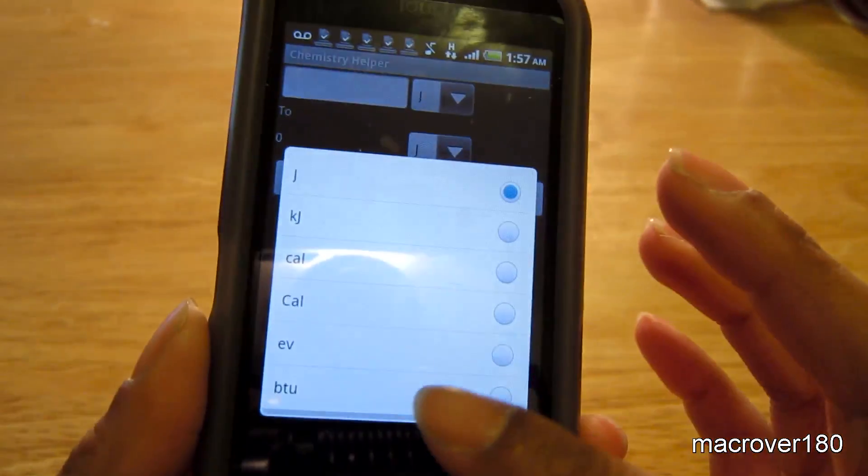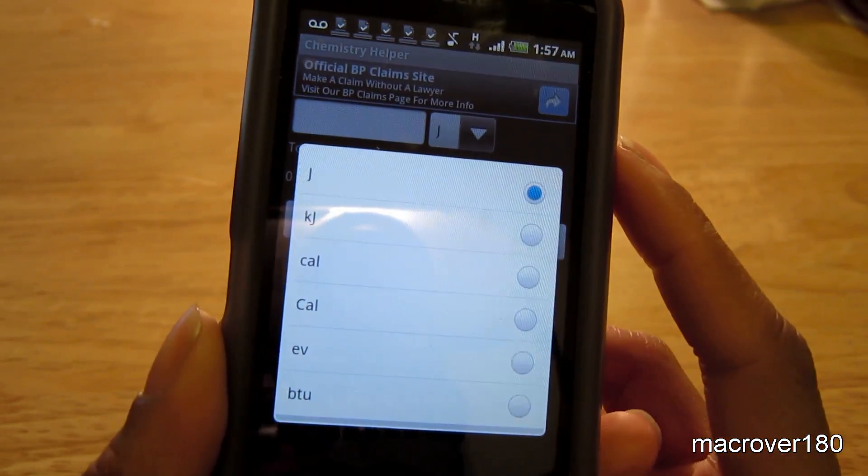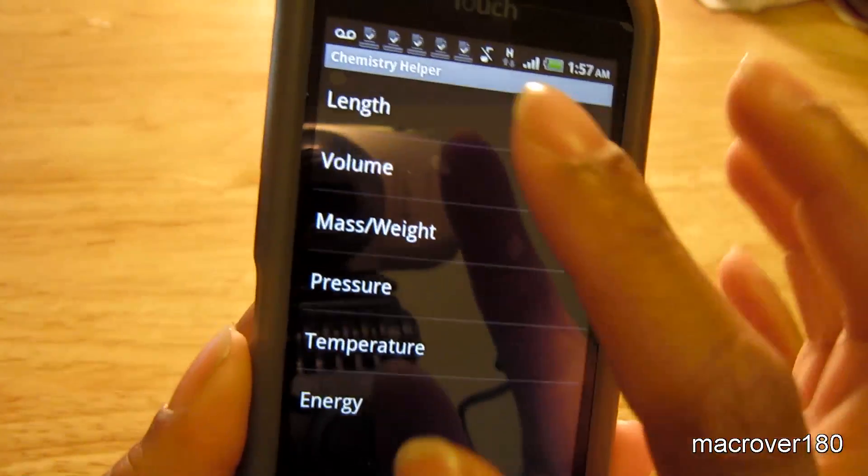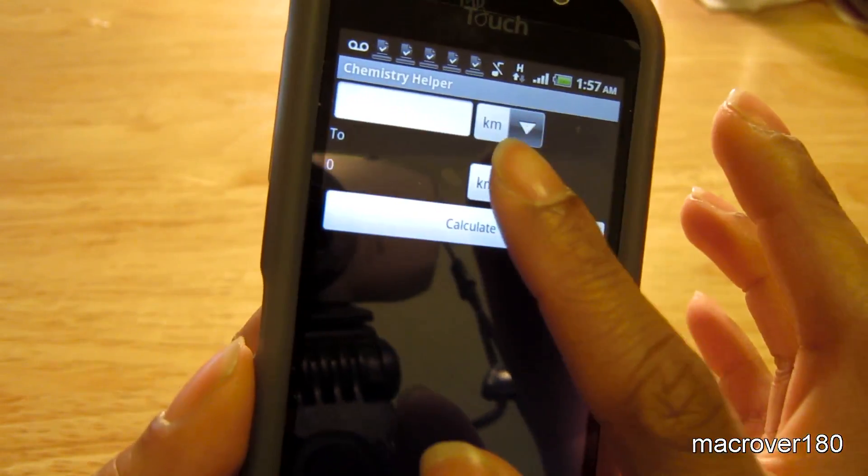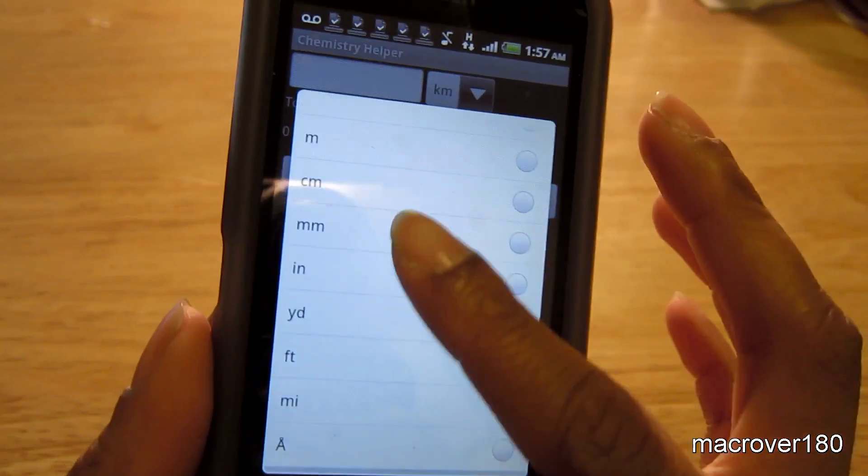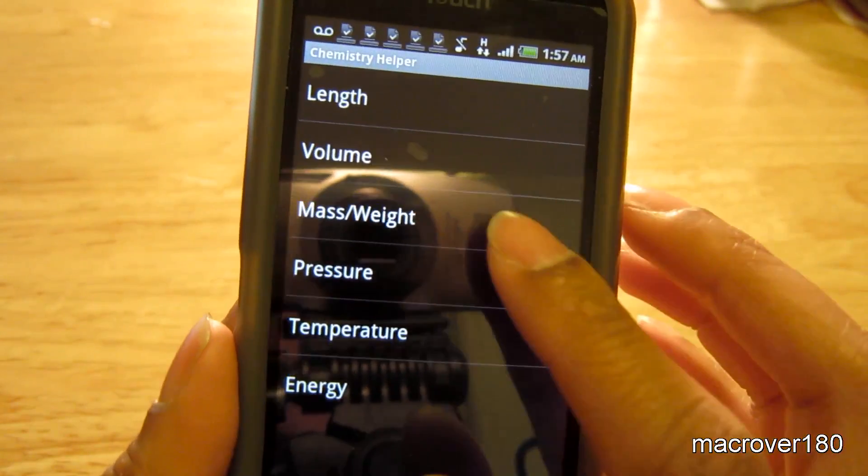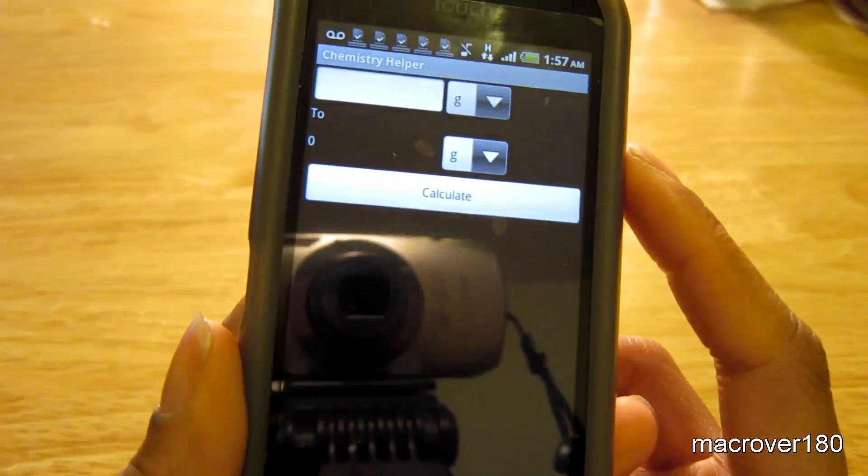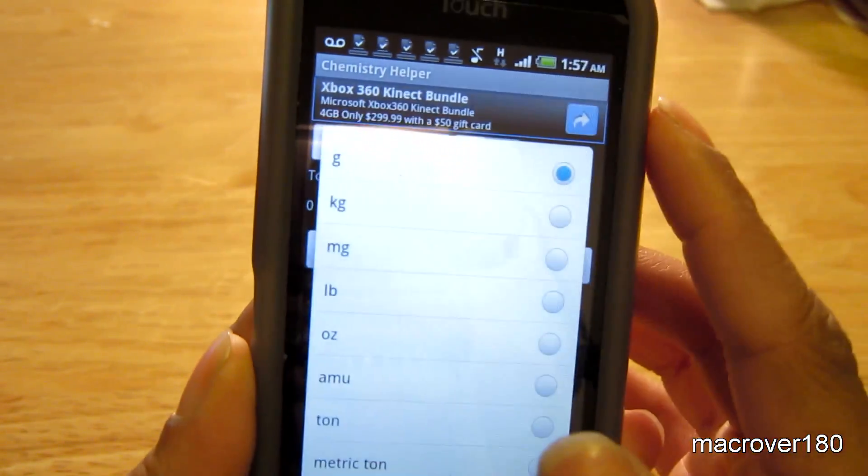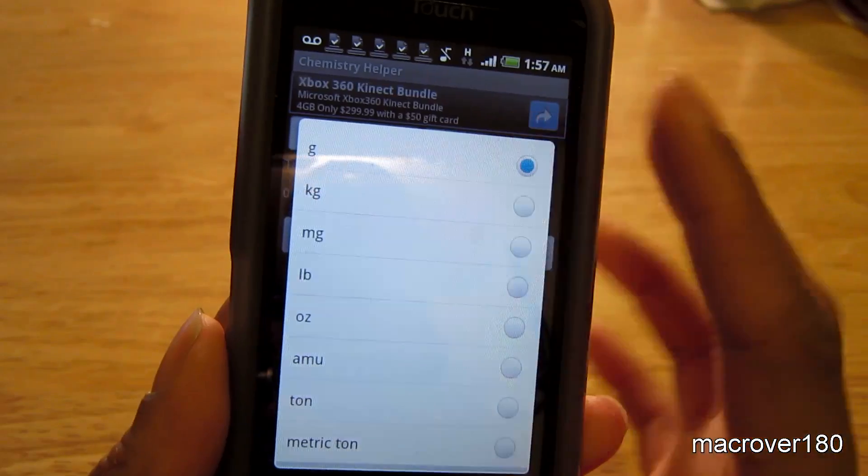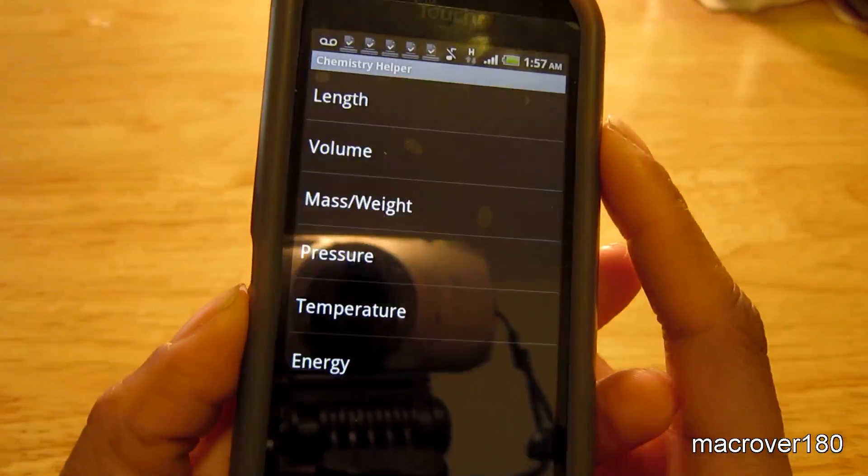So you can select that here. Length, the typical units. So it's nice to have that there, making this a well-rounded app.